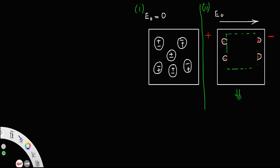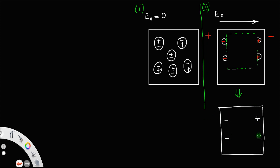Now, drawing this again — in this dielectric slab, what you can see is there is a net negative charge on the extreme left end and a net positive charge on the extreme right end. You can call this as minus q and plus q, because they are equal and opposite, with no charges inside. These two charges are separated by distance d, which is equal to the thickness of the slab.